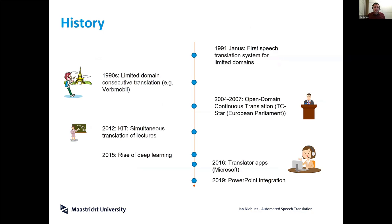These properties make some situations more challenging and others less so. Looking back at how this all evolved, people started with the easier scenarios. Already in 1991 we saw a first speech translation system which was able to translate in a very limited domain — only for a very specific task, for example for tourists asking where to go or where the next restaurant is.